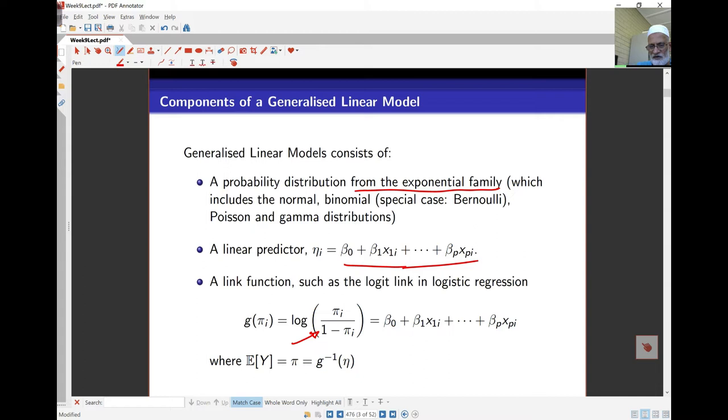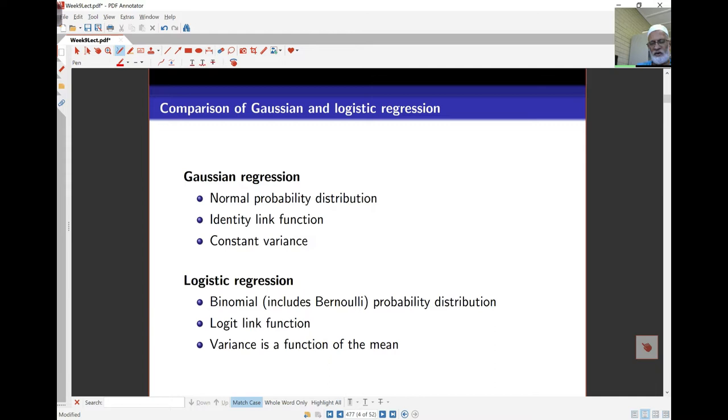In the case of the normal distribution, the g function is actually the mean itself. So here is a quick comparison of the normal or Gaussian regression. Where here we're looking at the responses normally distributed and the link is the identity function. That means the g function here of the mean of the responses is just mu itself. And the variance here is assumed to be constant.